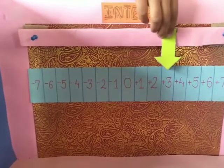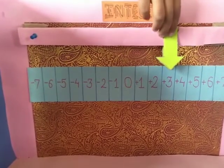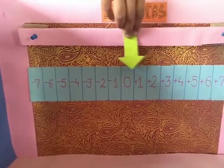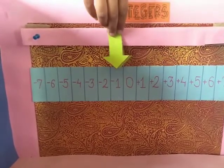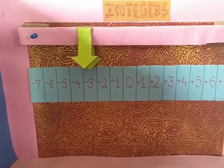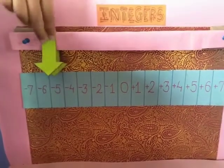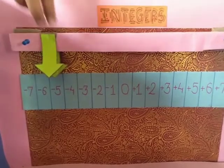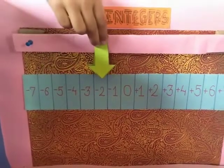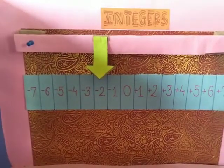0 plus 3 is equal to plus 3. Plus 3 minus 6 — counting: 1, 2, 3, 4, 5, 6. Minus 5 plus 3 is equal to minus 2.